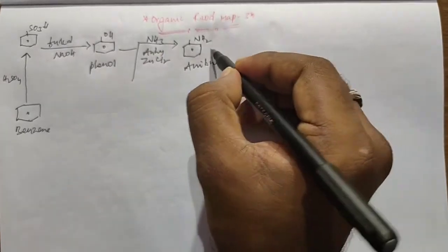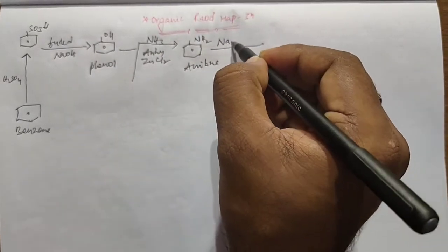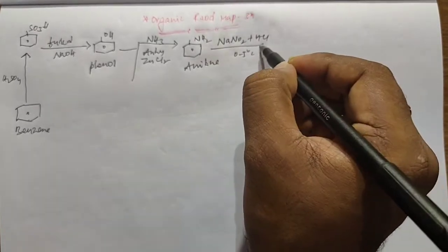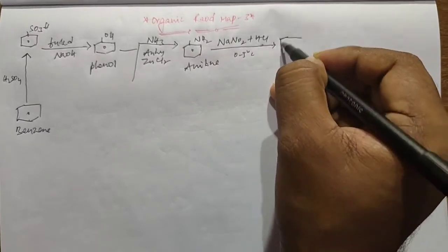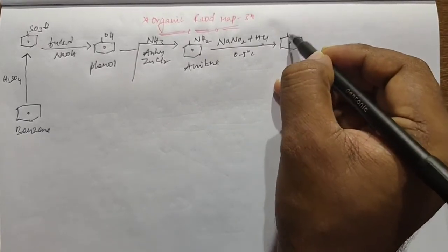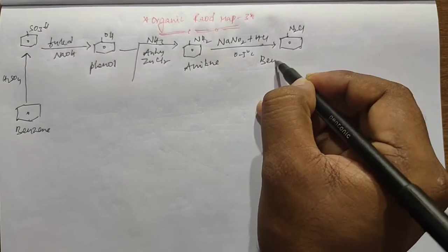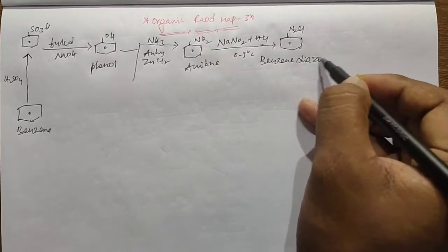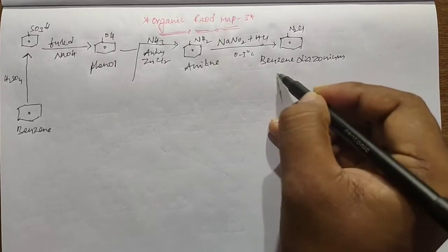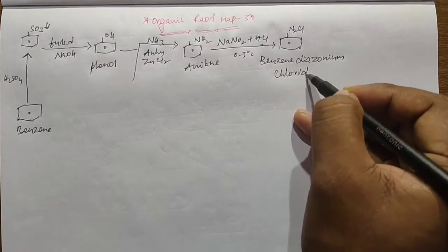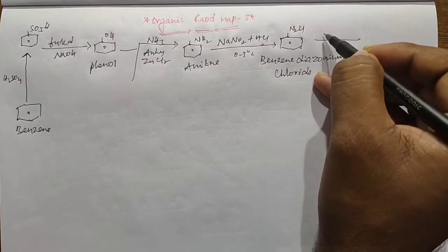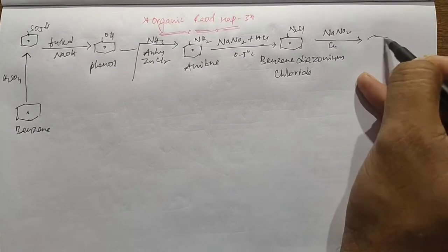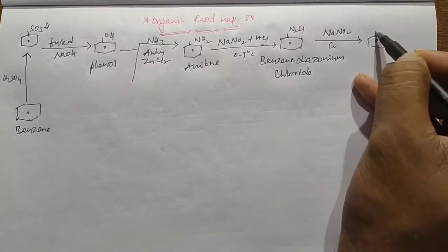When Aniline reacts with NaNO2 and HCl at 0 to 5 degrees of temperature, it can form Benzene Diazonium Chloride. After that, Benzene Diazonium Chloride reacts with Sodium Nitrite in presence of Copper metal to form Nitrobenzene.